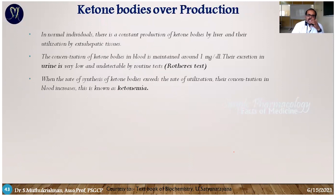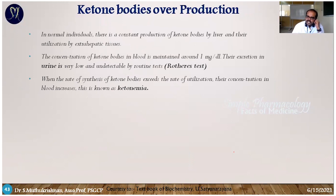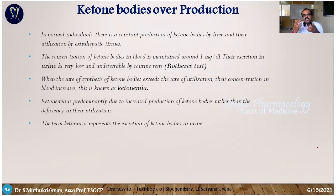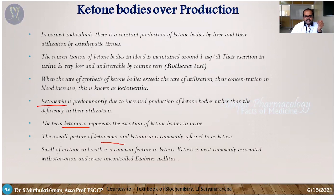Regarding overproduction: in normal conditions, ketone body levels are very low — less than 1 mg per deciliter in urine, a trace amount. However, in starvation or diabetic conditions, ketone body levels rise significantly. Excess ketone bodies in blood circulation is called ketonemia; if ketone bodies appear in urine, it is called ketonuria. Together these conditions are collectively referred to as ketosis.